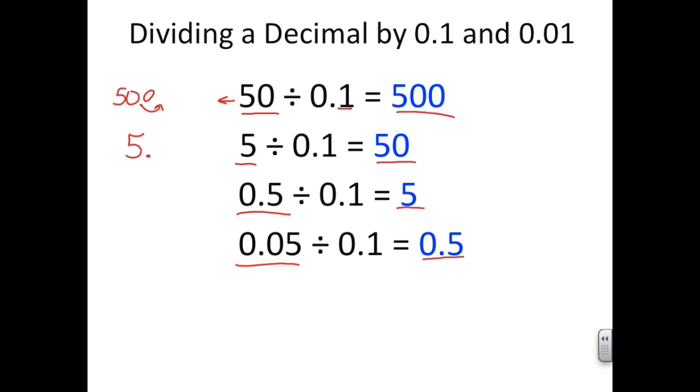If I take a look at the next one, I had to do the same thing. I started with 5, I had to move it one place to the right, and I ended up with 50. And so on. If I continue on with 0.5 divided by 0.1, one decimal place to the right gives me 5.